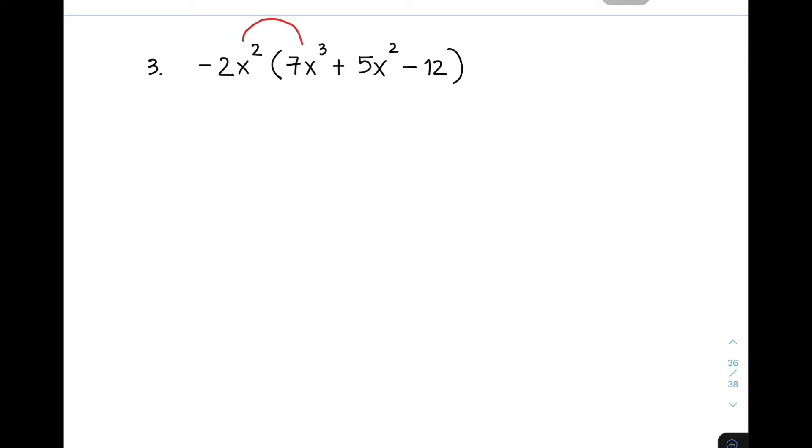So you have negative 2 times X squared. First, you need to multiply negative 2X squared to the first term, which is 7X cubed. And that will give you a negative answer because negative times positive is negative. And then 2 times 7, that is 14. Now for the variable part, remember that they have the same base. So you have your X. And then add the exponents 2 and 3. That will give you 5. You don't need to multiply it. Again, you just add the exponents.